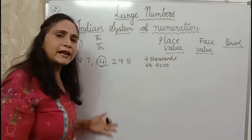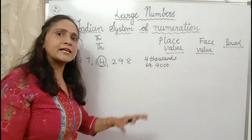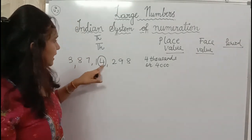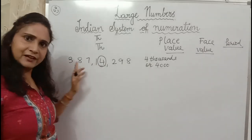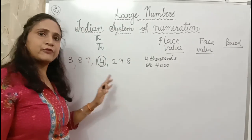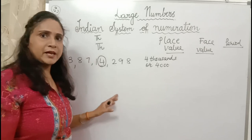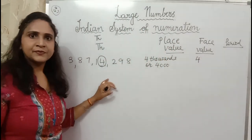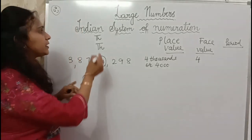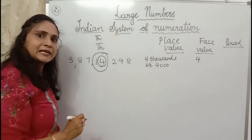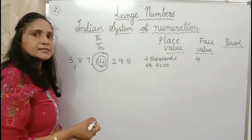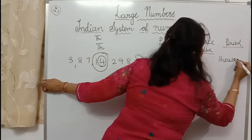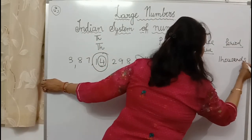How are we going to write place value? Four is at thousands place, so we write: four thousands — or in numbers, 4,000. You can write in both ways, either in numbers or in words. But whenever writing in words for place value, you put S with it. Face value of any number remains the same — wherever it is placed, four's face value will remain four only. Period: the period for this four is thousands.